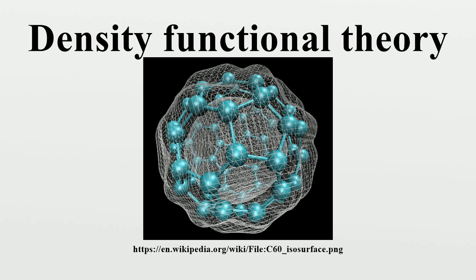Hohenberg-Kohn Theorems: 1. If two systems of electrons, one trapped in a potential and the other in, have the same ground state density, then necessarily. Corollary: The ground state density uniquely determines the potential and thus all properties of the system, including the many-body wave function. In particular, the HK functional, defined as, is a universal functional of the density. 2. For any positive integer and potential, a density functional exists such that obtains its minimal value at the ground state density of electrons in the potential. The minimal value of is then the ground state energy of this system.